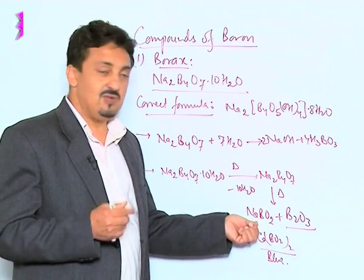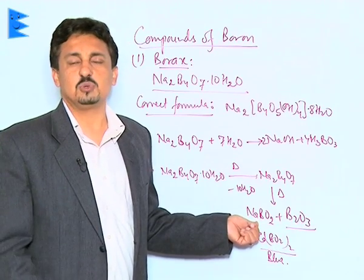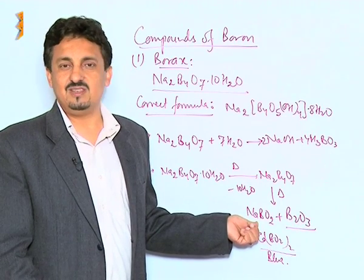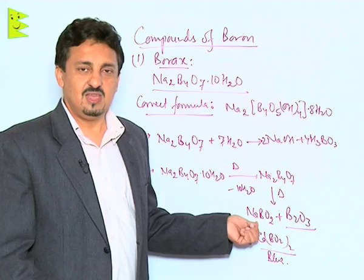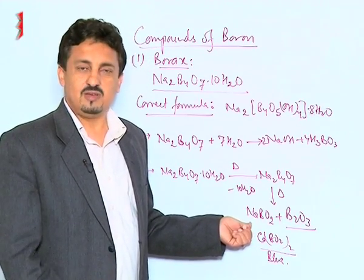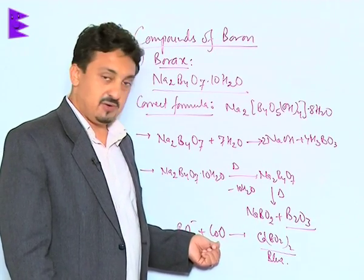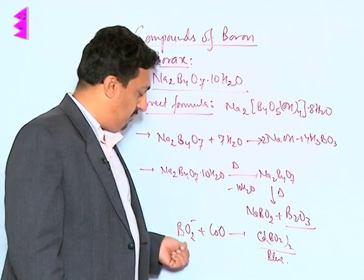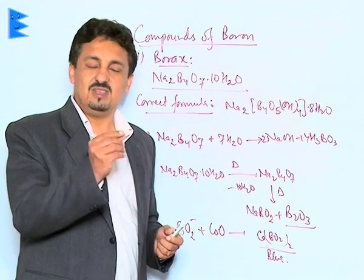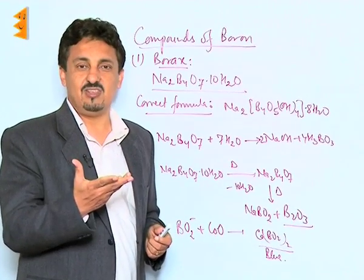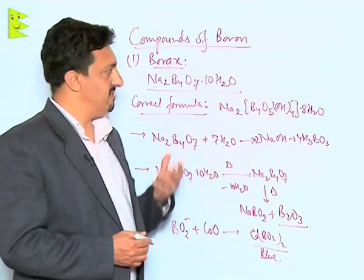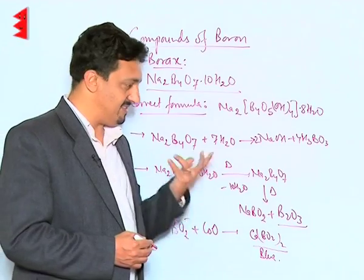When mixed with the oxides of transition metals, they give color. That is why this particular glassy bead test is used to identify the cation present in any given salt, which is also called a borax bead test in qualitative analysis. For example, when this glassy bead is heated with a cobalt salt, we get cobalt oxide, which combines with the metaborate and leads to the formation of cobalt metaborate, which is blue in color. So that glassy bead, which was initially transparent, acquires a blue color and that confirms the presence of cobalt.